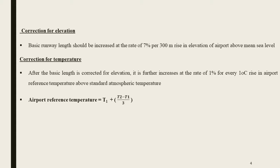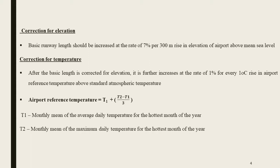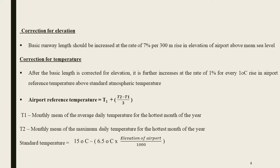The reference temperature equation is T1 plus (T2 minus T1) divided by 3. Here, T1 is the monthly mean of average daily temperature, T2 is the monthly mean of maximum daily temperature. The standard temperature is calculated as 15 degrees Celsius minus 6.5 degrees Celsius multiplied by the elevation of the airport above mean sea level divided by 1000.